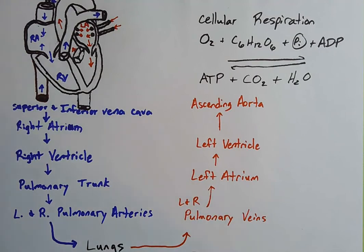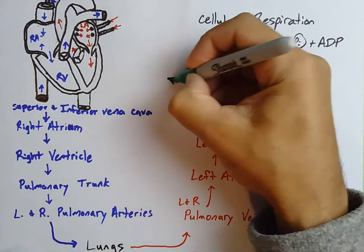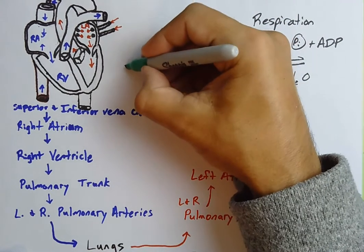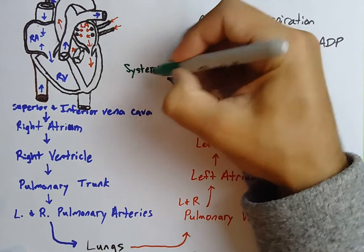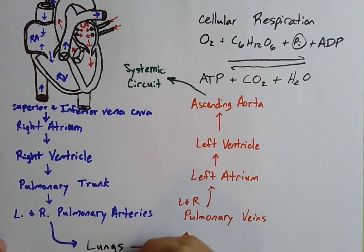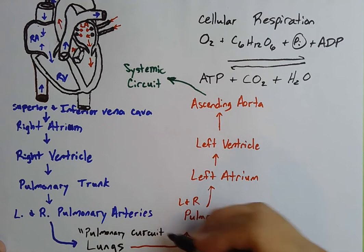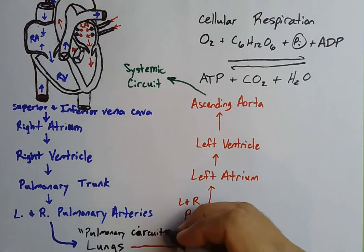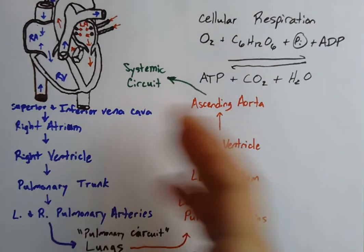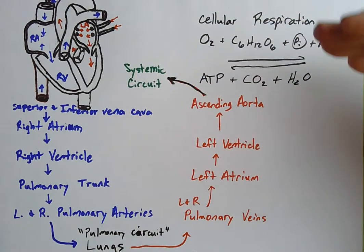The ascending aorta goes to the aortic arch, which branches into multiple divisions to feed the systemic circuit. From the ascending aorta, oxygenated blood gets transported throughout the entire body — out to the systemic circuit. The blood supply out to the lungs is the pulmonary circuit, and all the oxygenated blood going everywhere else is the systemic circuit. In the systemic circuit, oxygen gets dumped off at the tissues to make ATP.